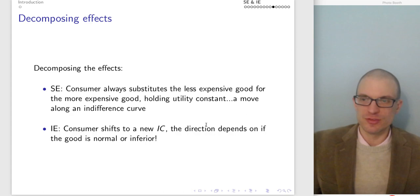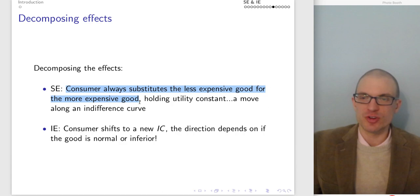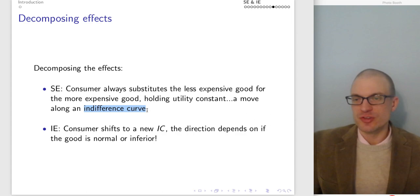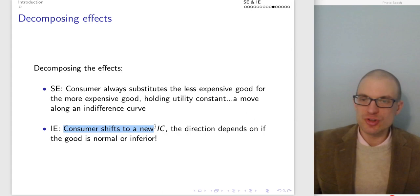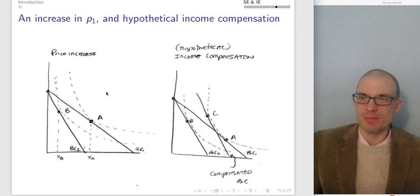In case you'd like a different explanation — same logic, explained differently. Decomposing these effects: the substitution effect is where the consumer always substitutes the less expensive good for the more expensive good, holding utility constant. This is a movement along an indifference curve — you'd move along the indifference curve, changing the composition of your bundle while staying on the same indifference curve but responding to the price change. The income effect is where the consumer shifts to a new indifference curve, and the direction depends on whether the good is normal or inferior.